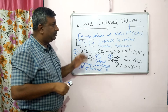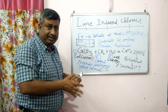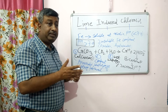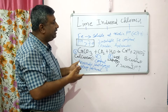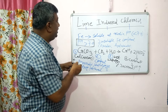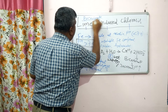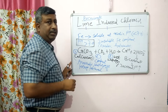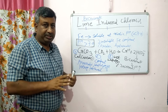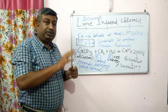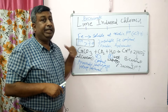This is lime-induced chlorosis. Iron is present in the soil but deficiency is induced because of the presence of lime — calcium carbonate. We can also call it bicarbonate-induced chlorosis, because the major chemical responsible is bicarbonate, which increases the pH. It is not actually iron that is absent, but because of calcium carbonate, high CO2 content, and high water content, the deficiency is induced.